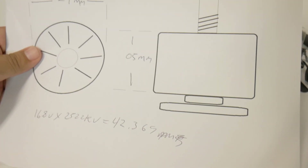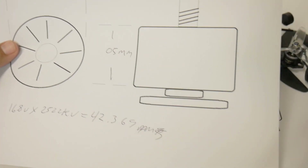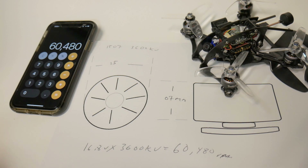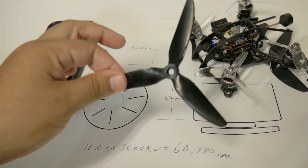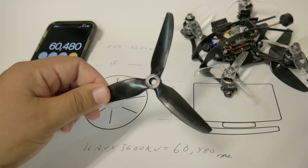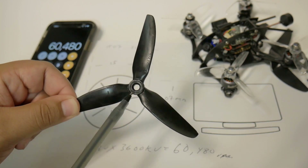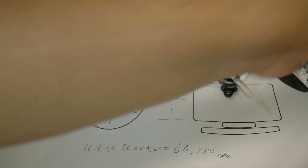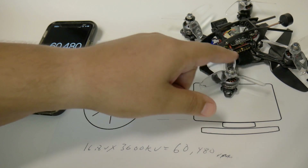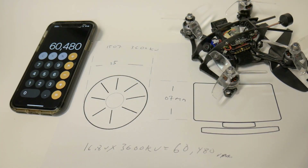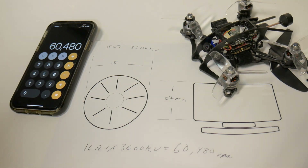Why is this RPM so much higher than the larger 2405 motor which was only around 42,000 RPM? The larger motor is spinning a much bigger prop, which can generate much more lift due to its larger size. These are much smaller props, so in order to generate the lift needed — even though the overall craft is lighter — you need to spin them faster. The smaller the motor, the faster it tends to spin.